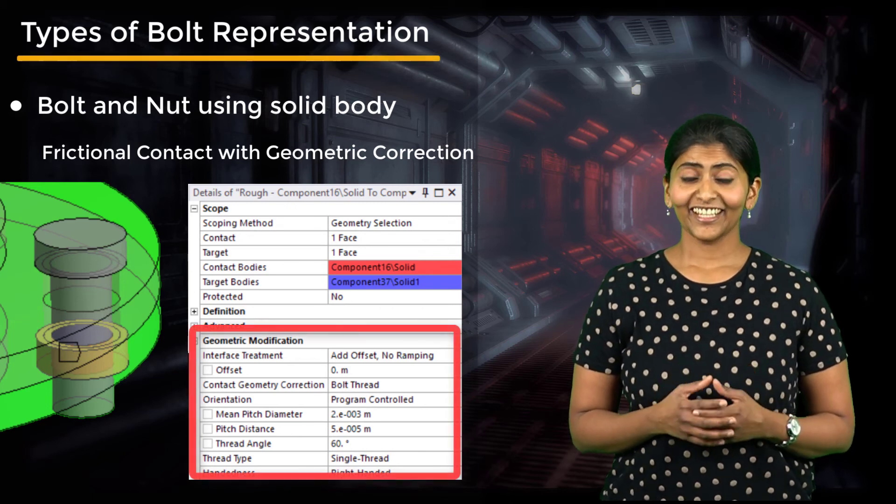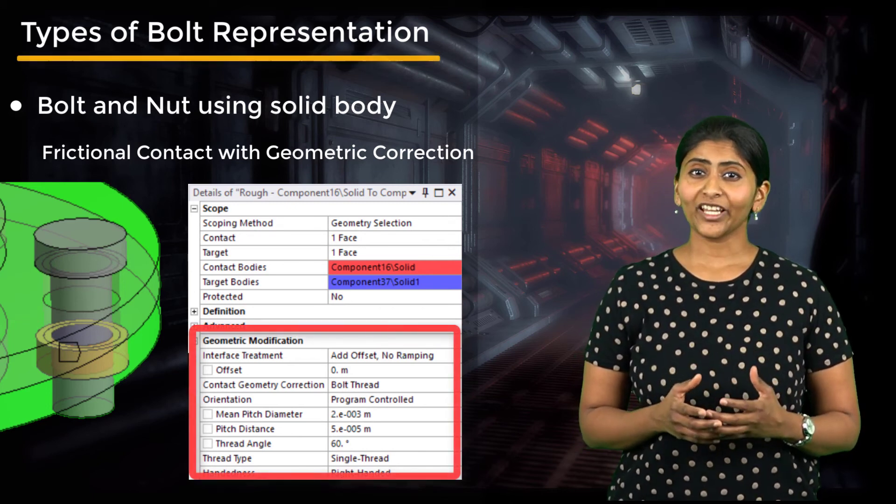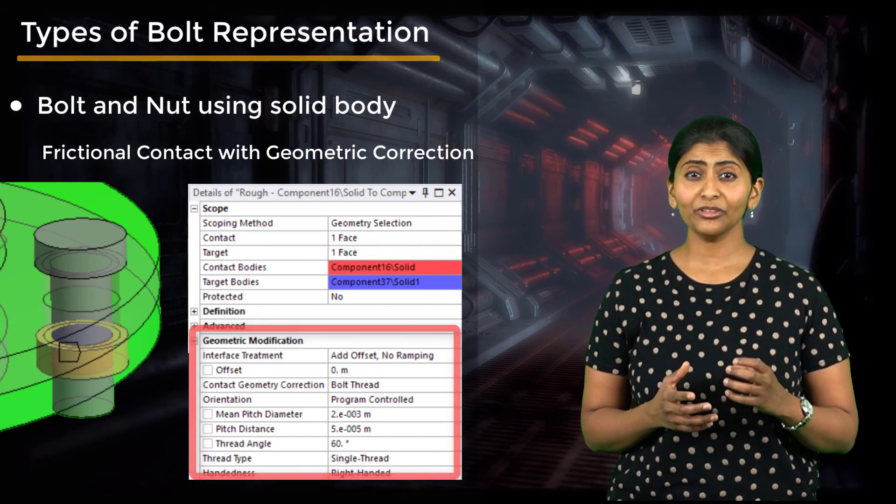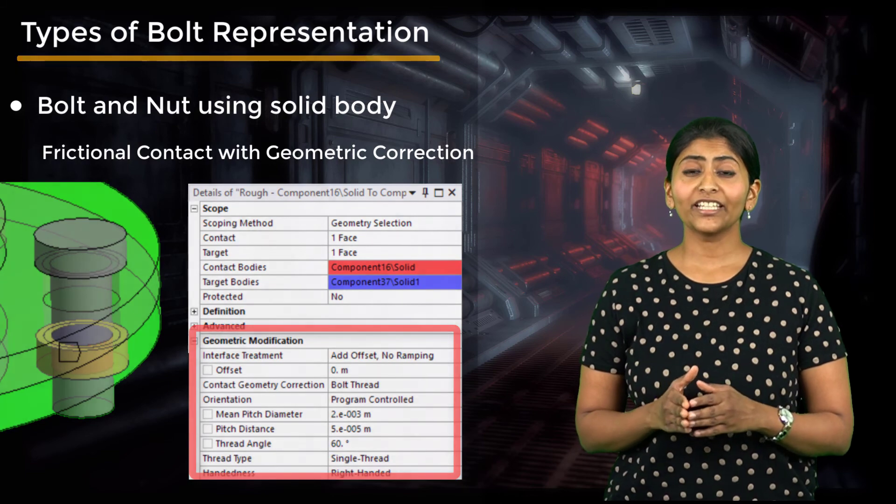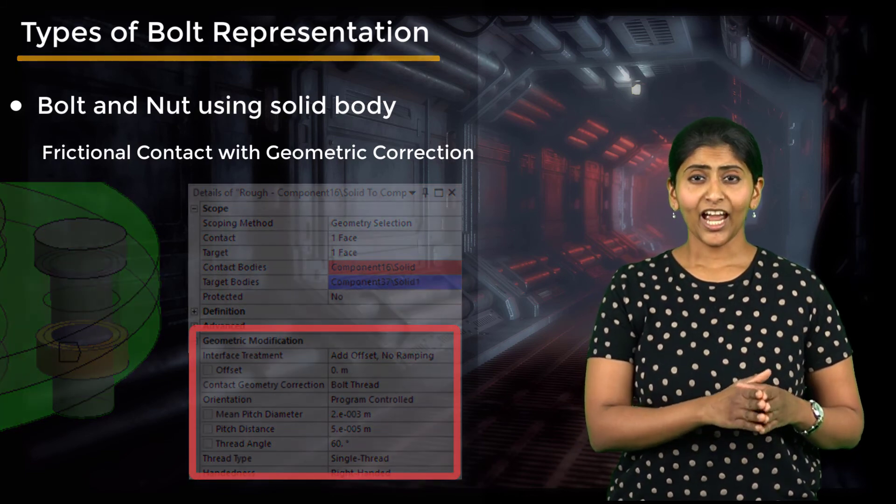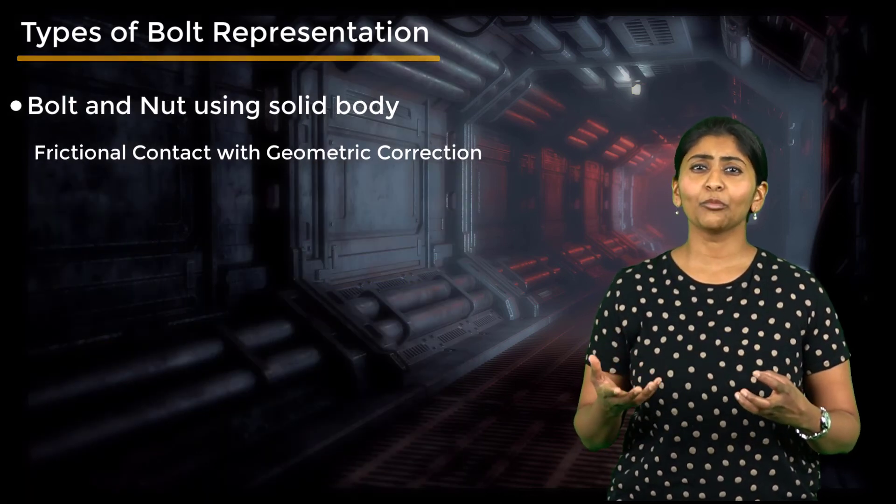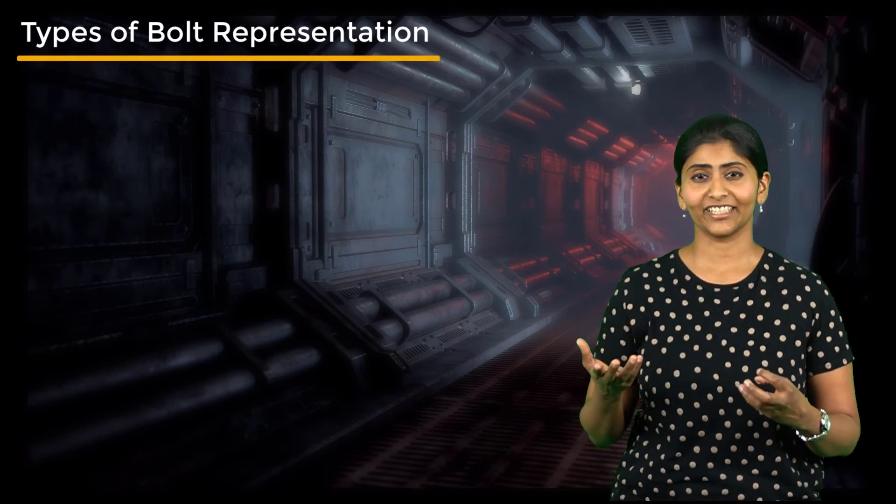Ansys Mechanical then calculates the contact normal behind the scenes. Thus, this is a convenient way of getting approximate stress values in the threaded portion without actually modeling the thread geometry and without increasing the number of nodes required to discretize the threads.